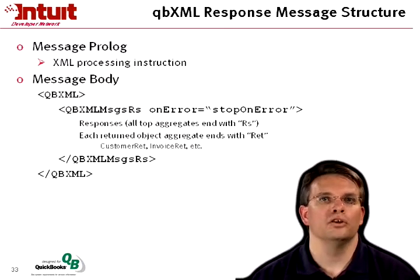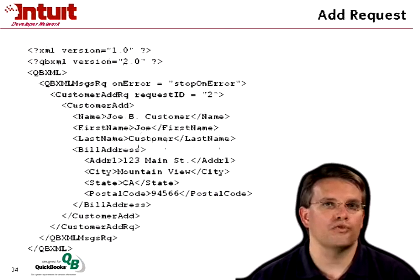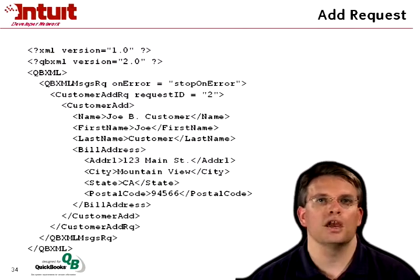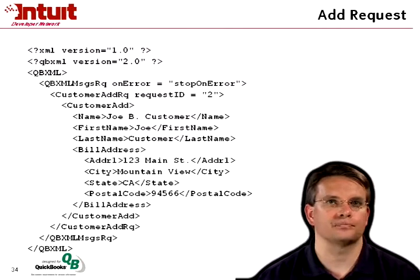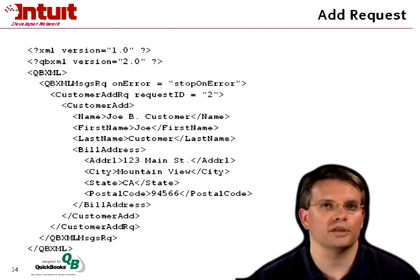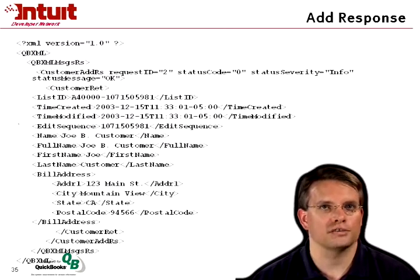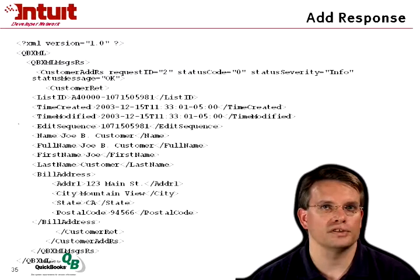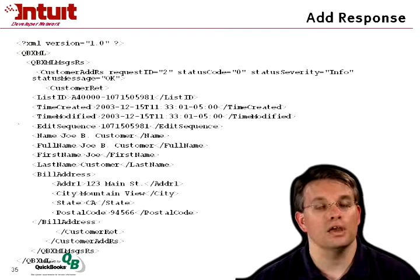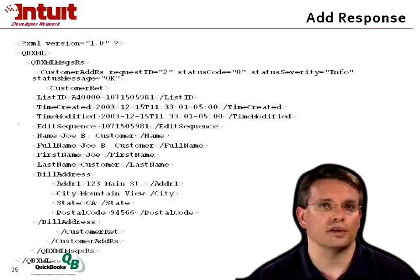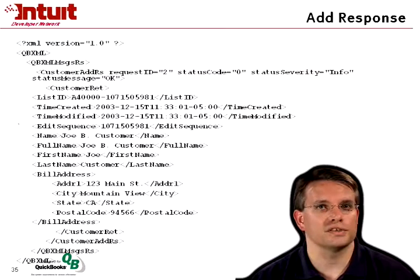Here's a simple add request to add a customer — we're providing the name, first name, last name, and billing address, and telling QuickBooks to stop on error. The response is straightforward: we get the QBXML messages RS envelope, then the customer add response. The request ID is present, the status code is zero (successful), and we see the message and severity. Then we get the customer RET object with the list ID assigned by QuickBooks, the time created, time modified, and edit sequence.